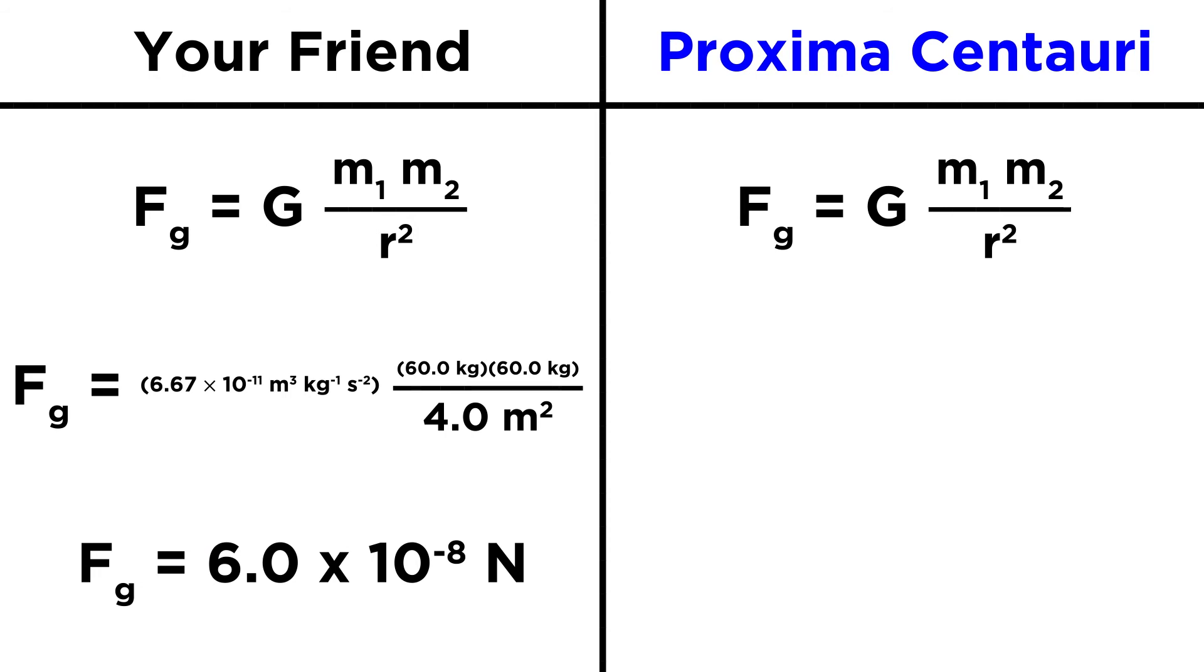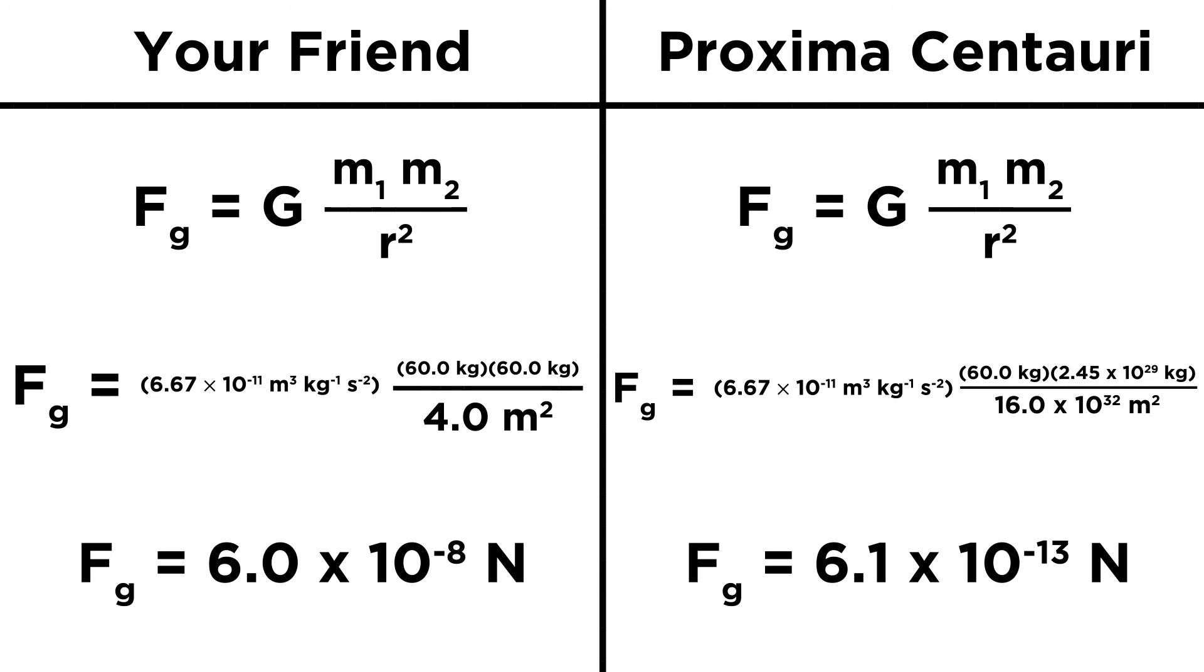Now let's do one for the star. We replace the mass of your friend with the mass of the star, but we also change this value to the distance to the star. So we have a huge number on top, but we have a pretty big number on the bottom too, and we have to square it. So when we evaluate this, we get six point one times ten to the negative thirteen newtons.